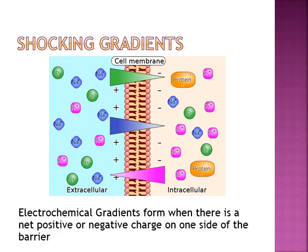It's not just the amount of solute present — it could also be the charge. If you have an equal number of solutes on either side of a membrane but more positive charges on one side and more negative charges on the other, you've created what's called an electrochemical gradient. Those charges want to even out, creating a flow of molecules from one point to another.